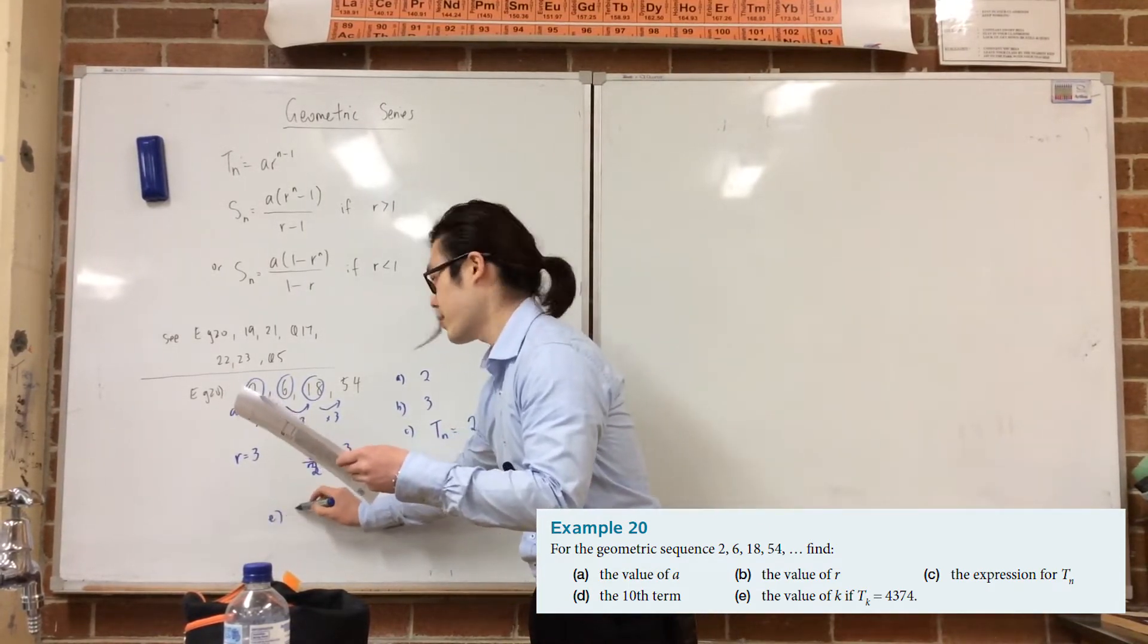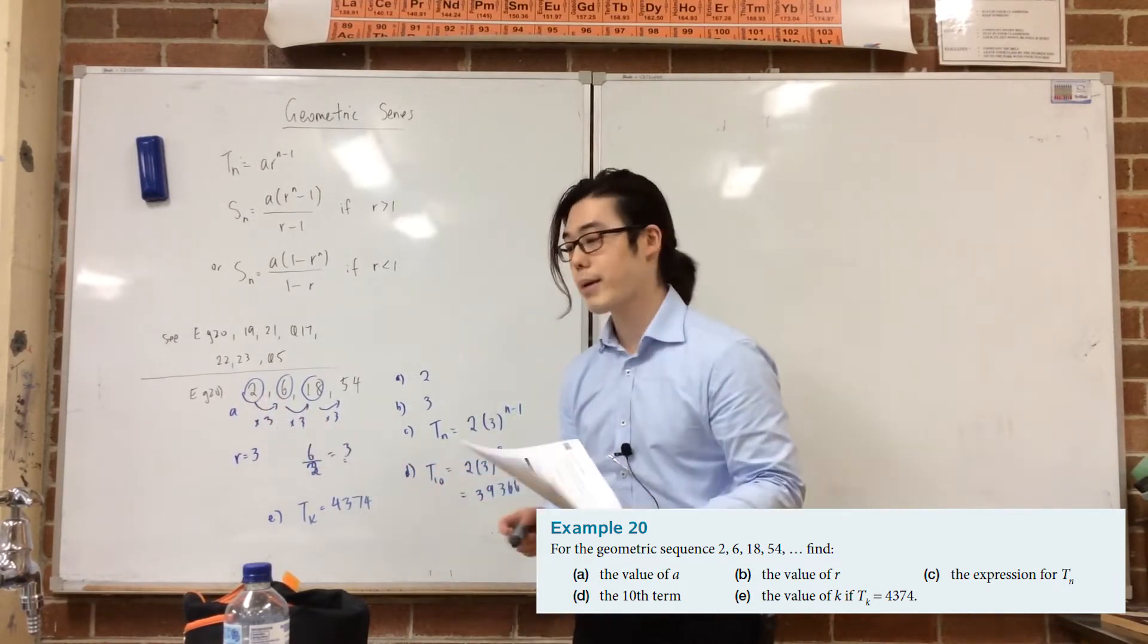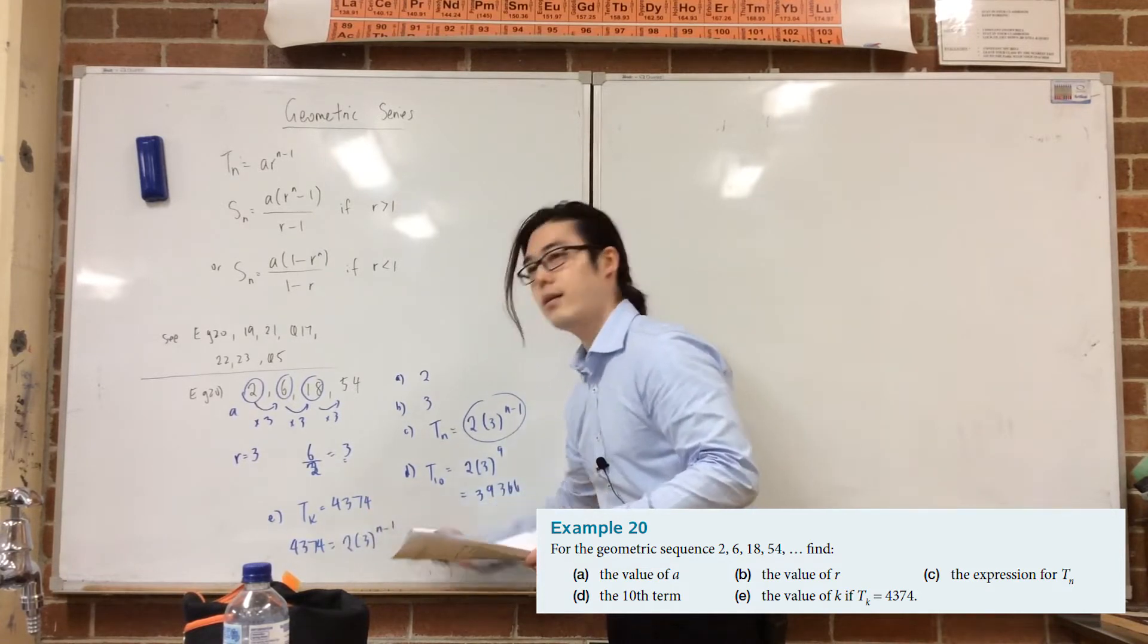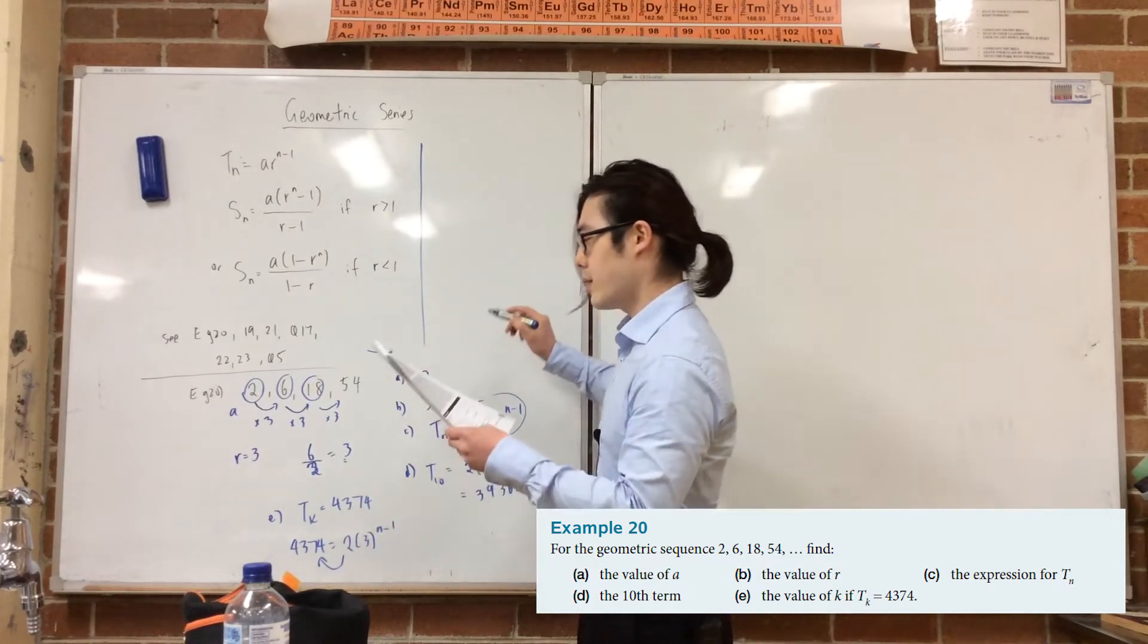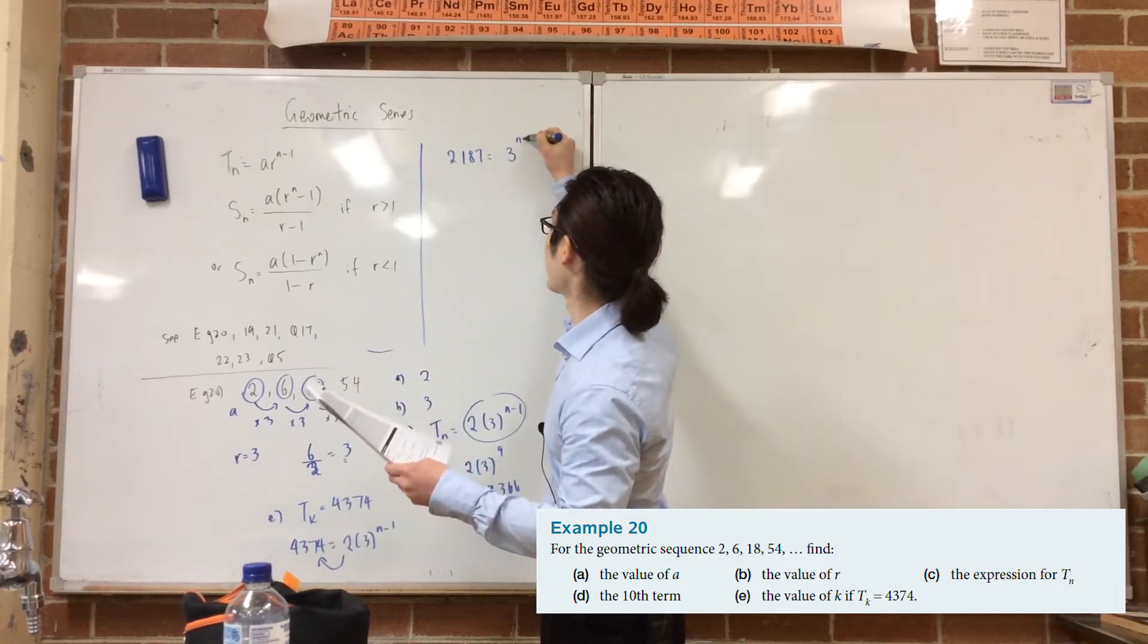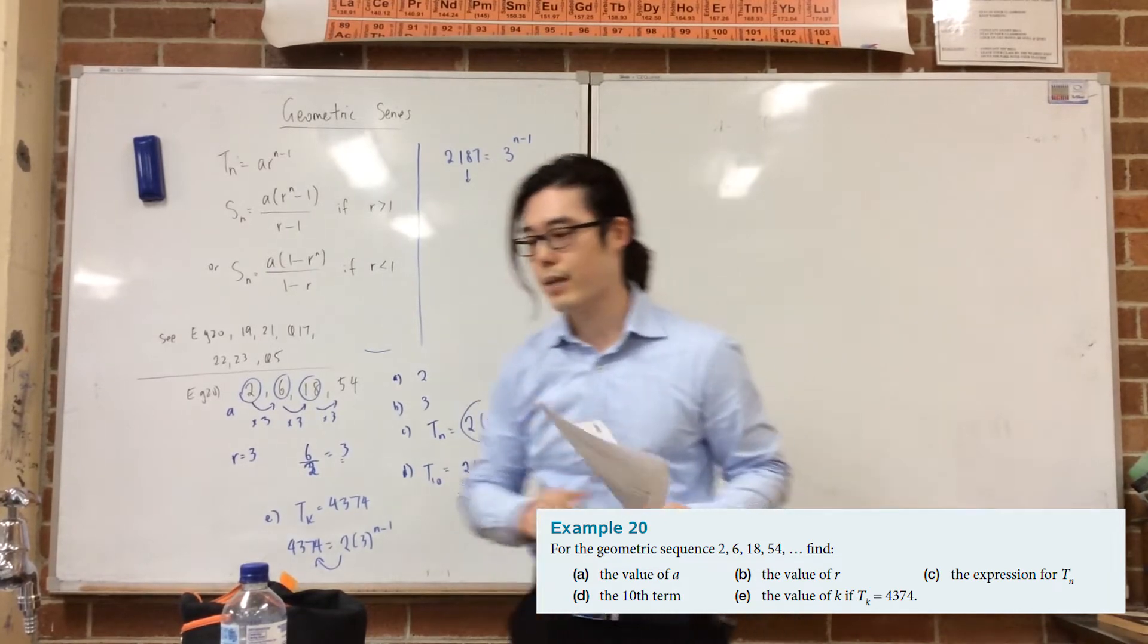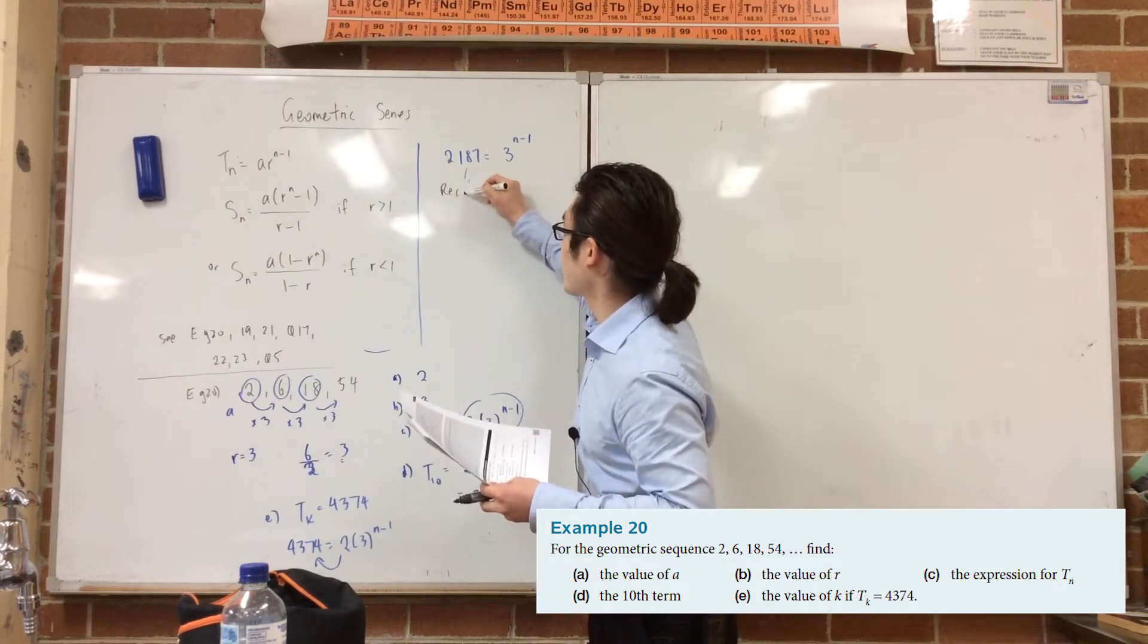And obviously, if you want to go backwards, find the value of k when the term is 4,374. So you've got to work backwards. So you've got 4,374 is equal to that expression. And then we're just going to look for n. Divide the two. Sorry, my board works a bit messy. 4,374 divided by two is 2,187. And then you've got three to the power of n minus one.